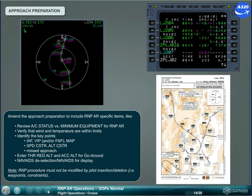Amend the approach preparation to include RNPAR-specific items: review aircraft status versus minimum equipment for RNPAR. Verify that wind and temperature are within limits. Identify the key points: intermediate approach fix, vertical intercept point, and/or FAP, and missed approach point. Check speed constraints and altitude constraints. Missed approach: enter thrust reduction altitude and acceleration altitude for go-around. Navigation aids deselection and navigation aids for display.